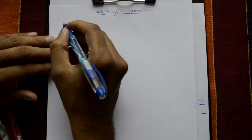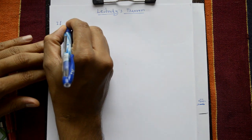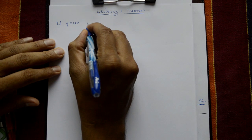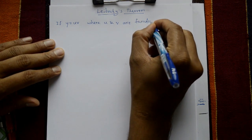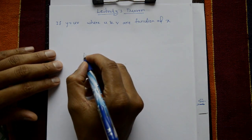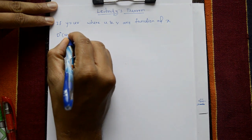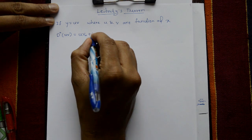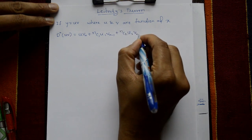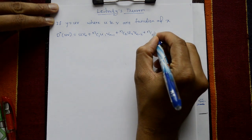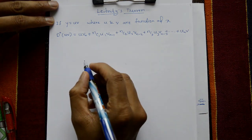Leibniz theorem: first we understand what the theorem is, then we solve the problem. If y equals uv, where u and v are functions of x, then Leibniz theorem states that d raised to n of (uv) equals u·vn plus nC1·u1·vn-1 plus nC2·u2·vn-2 plus nC3·u3·vn-3 and so on, with the last term being un·v.